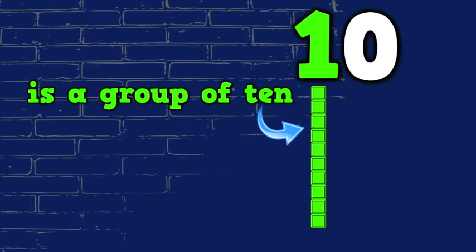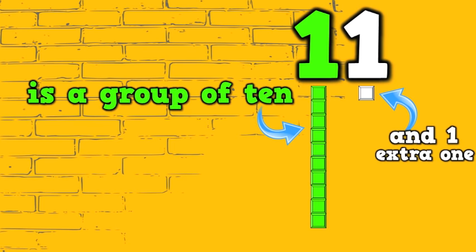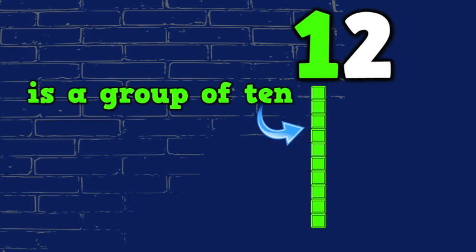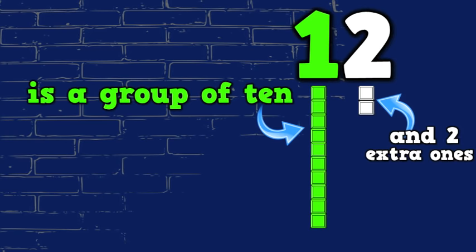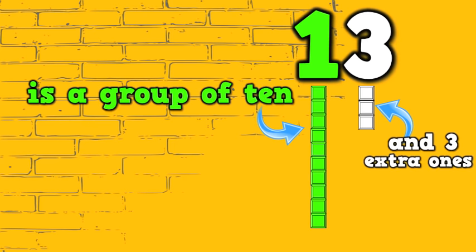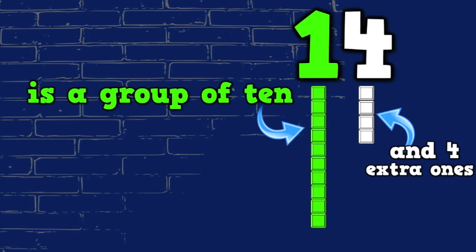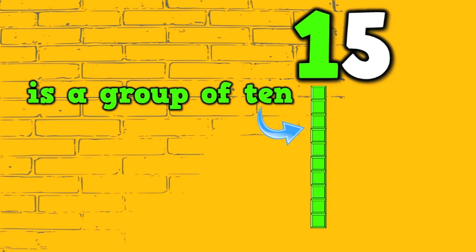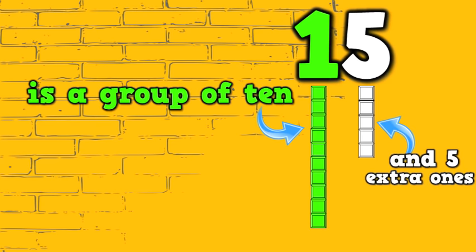Ten is a group of ten and zero extra ones. Eleven is a group of ten and one extra one. Twelve is a group of ten and two extra ones. Thirteen is a group of ten and three extra ones. Fourteen is a group of ten and four extra ones. Fifteen is a group of ten and five extra ones.